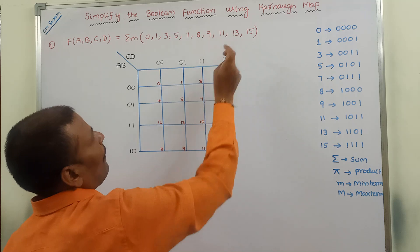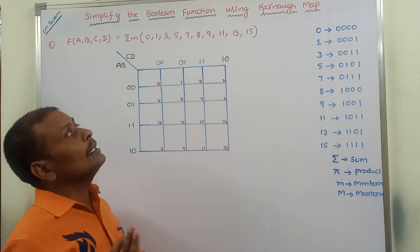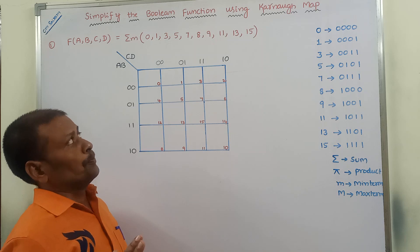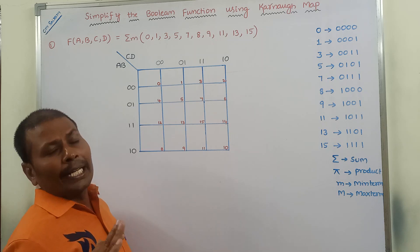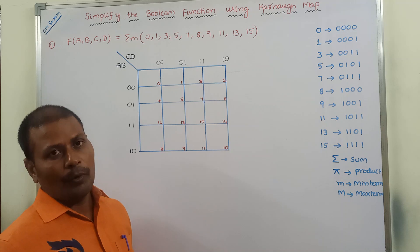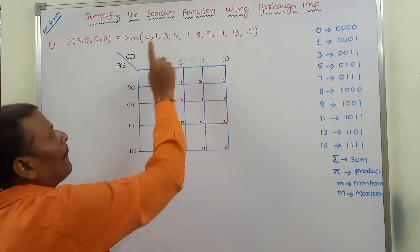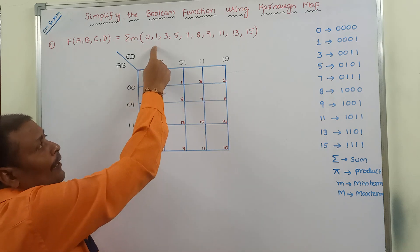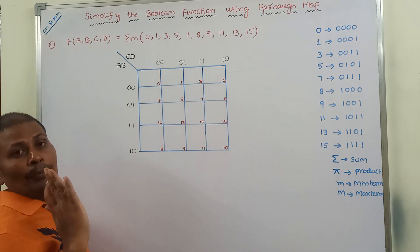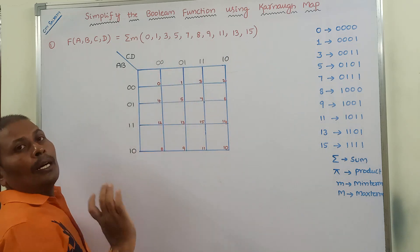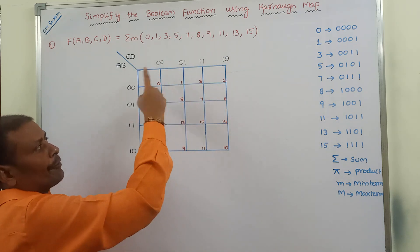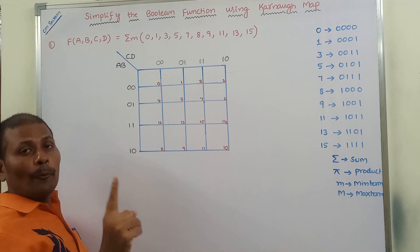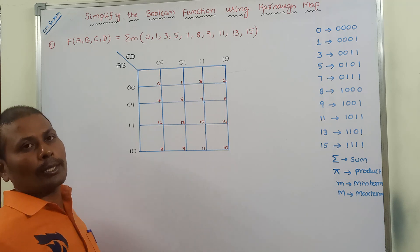So the given minterms are 0, 1, 3, 5, 7, 8, 9, 11, 13, and 15. Whatever minterms we are given, identify that minterm in the corresponding cell number of the four-variable Karnaugh map and place 1 in that box.